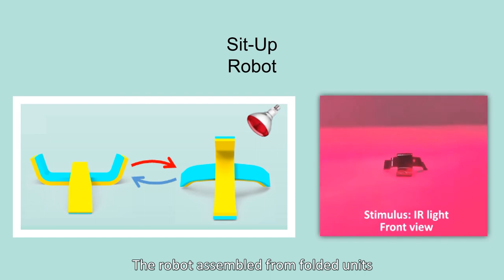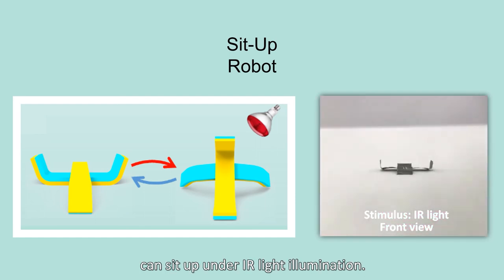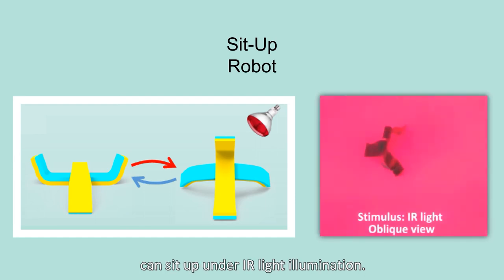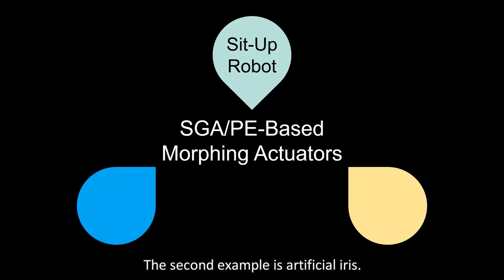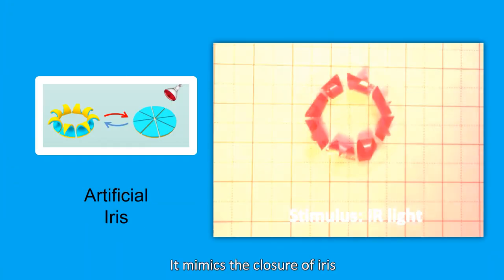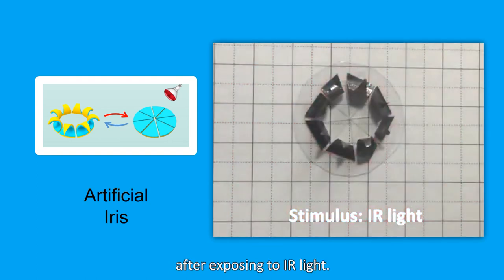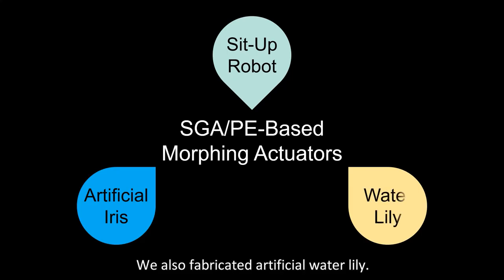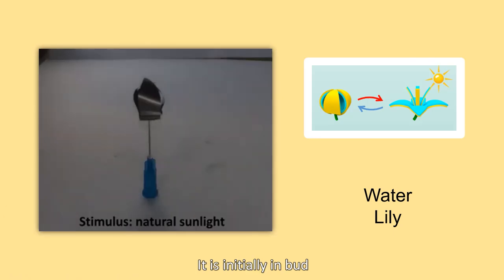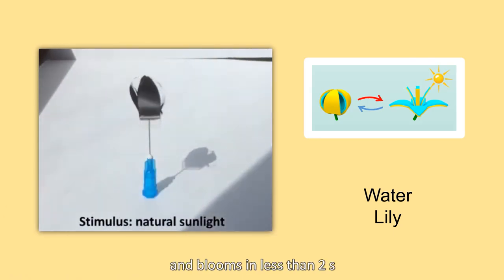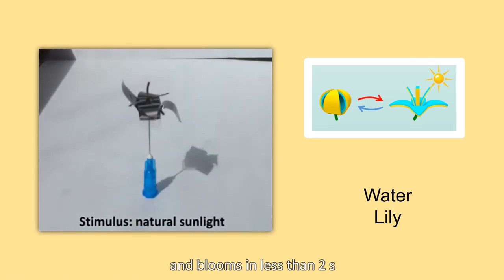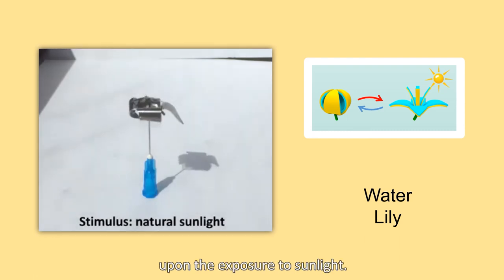The robot, assembled from folded units, can sit up under IR light illumination. The second example is an artificial iris, which mimics the closing of an iris after exposing to IR light. We also fabricated an artificial water lily: it is initially closed, and blooms in less than two seconds upon exposure to sunlight.